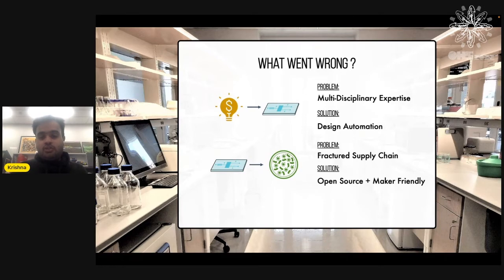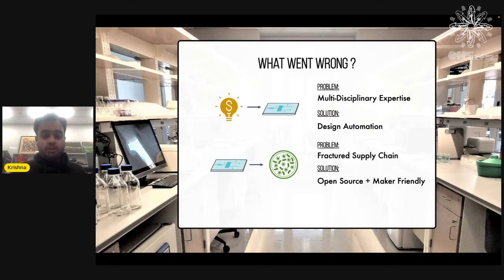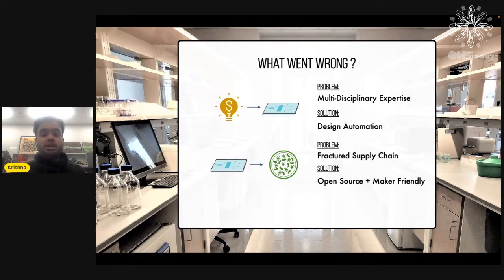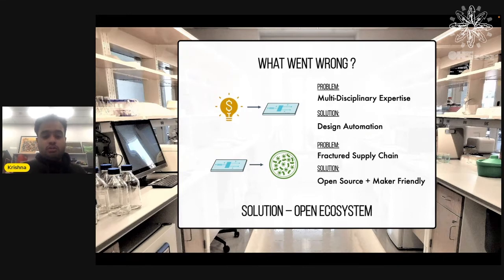So if you didn't have like a billion dollars — and I didn't — you'd ask: how do we fix this problem? The answer for me was: let's build design automation tools to get rid of the multidisciplinary expertise requirement, because I didn't have any. The second part was let's make this open source and maker-friendly, so it's easier to source components, make devices, and let everybody replicate making these devices. What we basically needed was an entire open ecosystem for making this stuff.